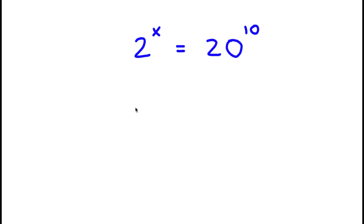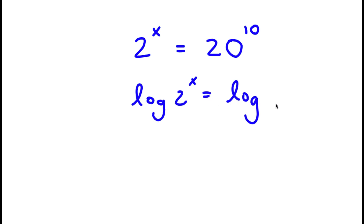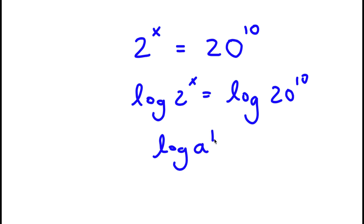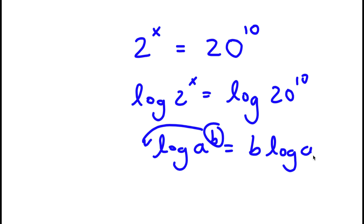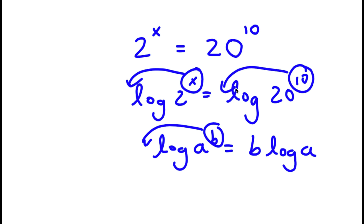So now I have log 2 to the power of x is equal to log 20 to the power of 10. Now if I have something in the form log a to the power of b, I can move this exponent b to the front — so this equals b times log a. So log 2 to the power of x becomes x times log 2, and log 20 to the power of 10 becomes 10 times log 20.